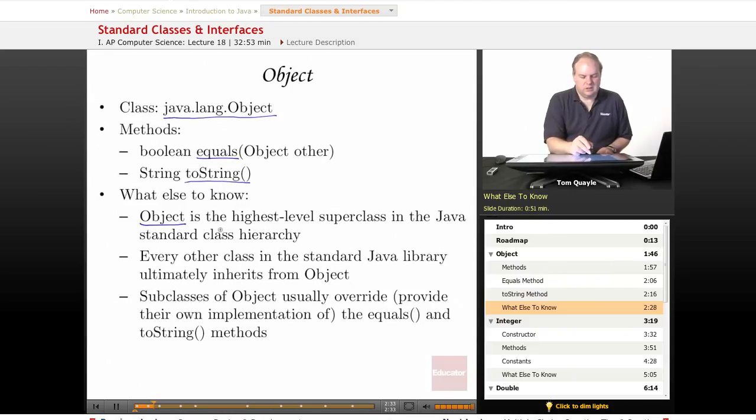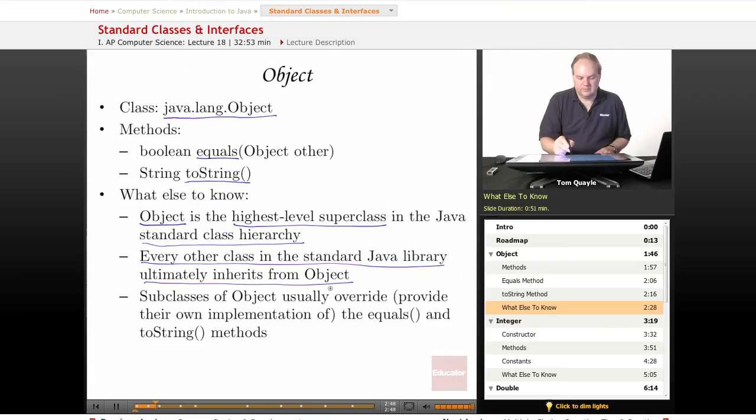First of all, fundamentally, Object is the highest level superclass in the standard Java class hierarchy. Every other class in the standard Java library ultimately inherits from the Object class. And subclasses of Object, which are every other class that's provided by Java, usually override, which means they provide their own implementation of these two methods, the equals method and the toString method. These methods are provided in the Object class primarily to have something in place that can be overridden in later subclasses.